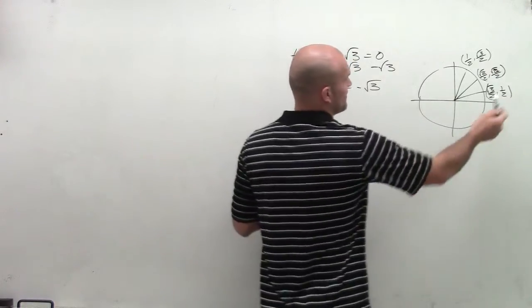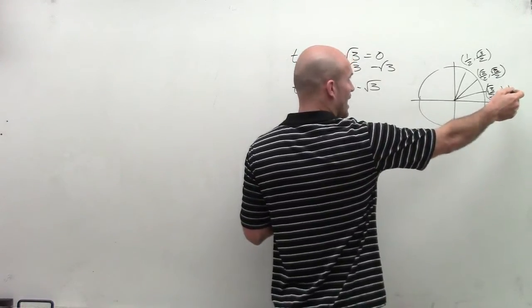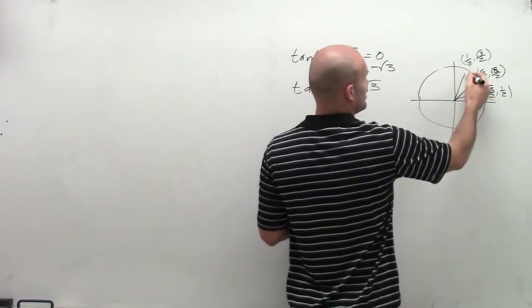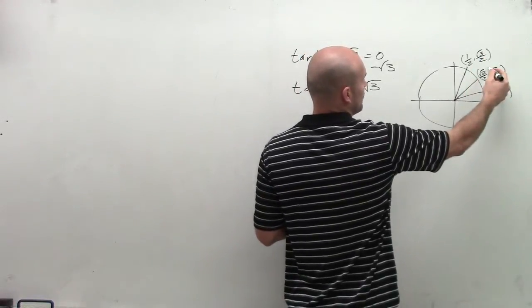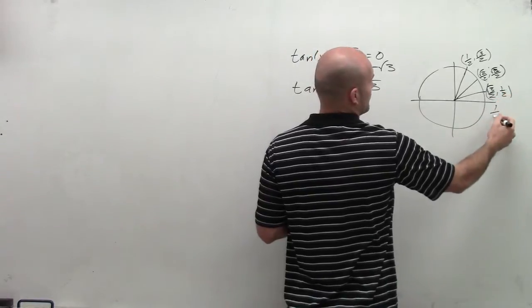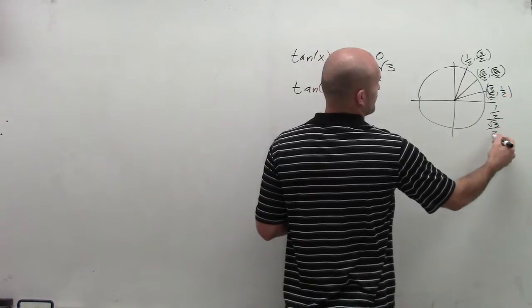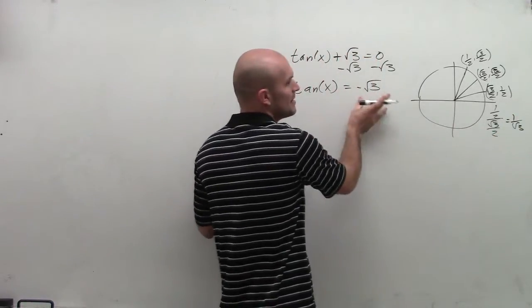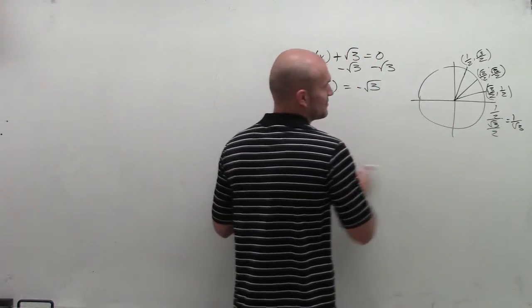So which one of these is going to provide when I put y over my x a square root of 3? Well, what we notice is this goes to 1. This is going to have 1 half over the square root of 3 over 2, which is going to give me 1 over square root of 3, which when I rationalize the denominator is not going to give me the square root of 3.